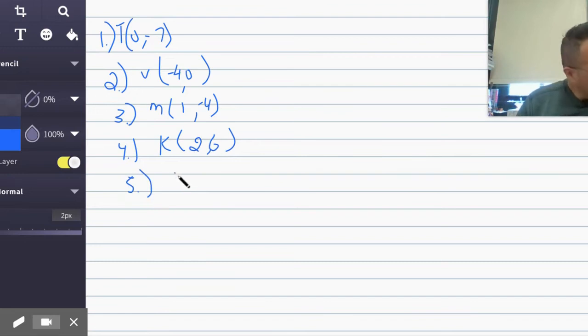Five, (-3, -4). What point is (-3, -4)? J. Six, (3, 0), that's G. Seven, (-2, 4).